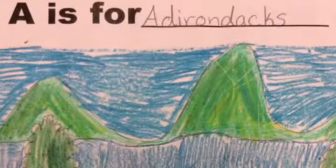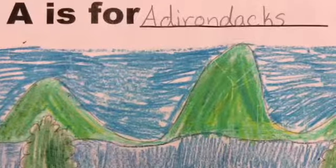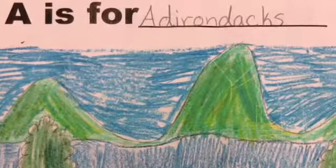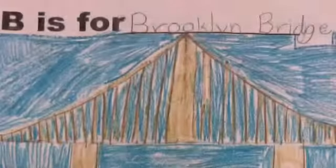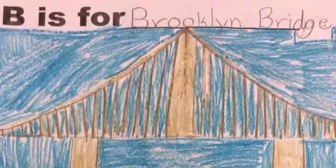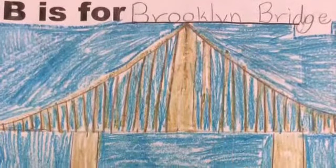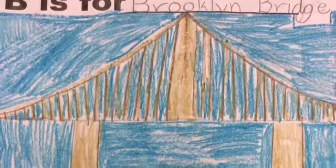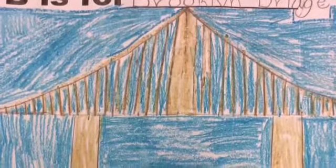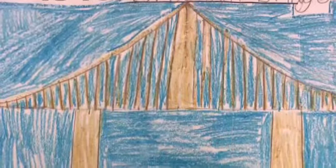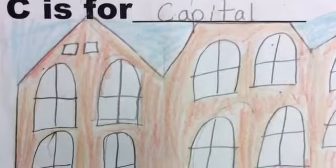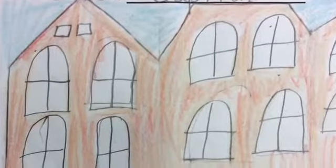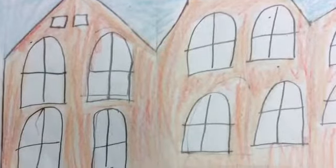A is for Adirondacks because New York has rivers and mountains. B is for Brooklyn Bridge because it was the world's first steel suspension bridge. C is for Capital, where laws are proposed and debated.